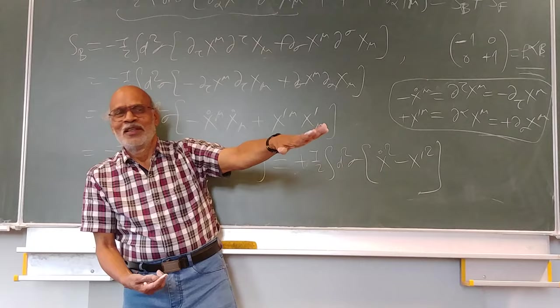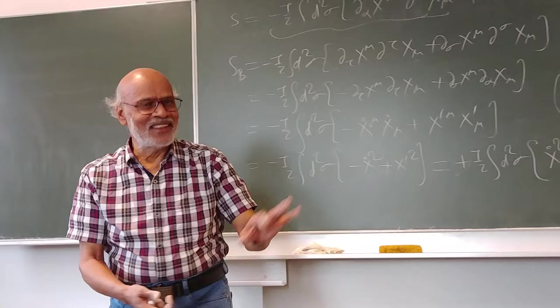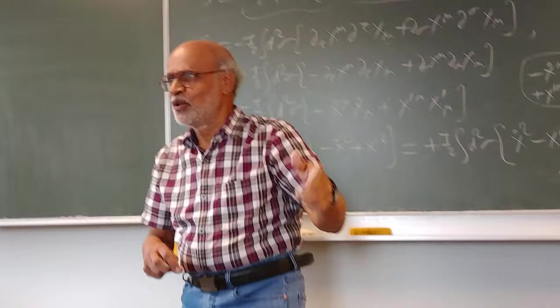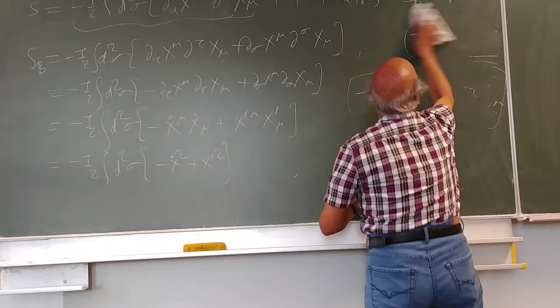When you talk about the superstring theory then μ only goes up to 0, 1, 2, ..., 9. Here I just wanted to show that kinetic energy is indeed positive as it looks from here. There is a minus sign hanging around but it is because of the metric that we have chosen.